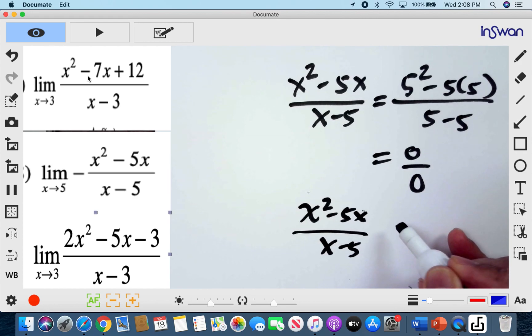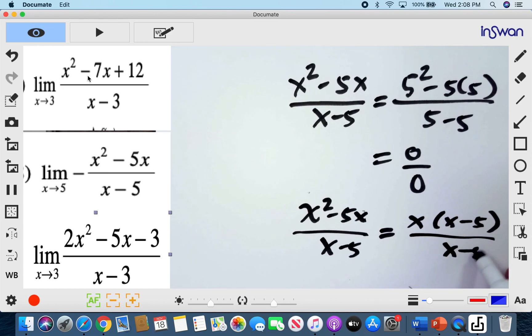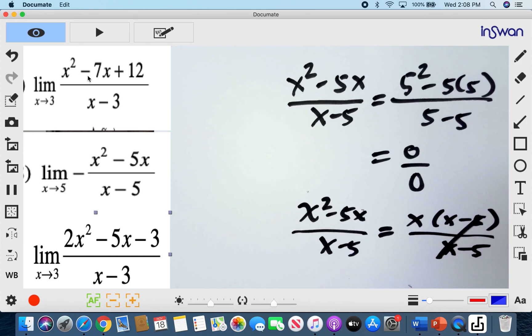So you have x squared minus 5x over x minus 5. Now this is factorable by x. We call it a common factor since x is common to both. We can divide x to each expression. And what's left is x minus 5 all over x minus 5. And then we cancel it out.